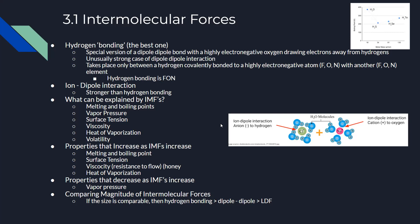Intermolecular forces can be used to justify melting and boiling points, vapor pressure, surface tension, viscosity, heat of vaporization, and volatility. Properties that increase as IMFs increase include melting/boiling point, surface tension, viscosity (e.g., honey), and heat of vaporization. Vapor pressure decreases as IMFs increase. In terms of magnitude: hydrogen bonding is greatest, dipole-dipole is intermediate (polar molecules only), and LDF is weakest — though LDF depends on polarizability, so this ranking only holds when molecule sizes are comparable.